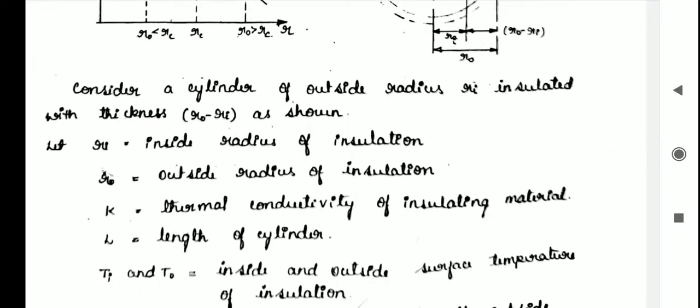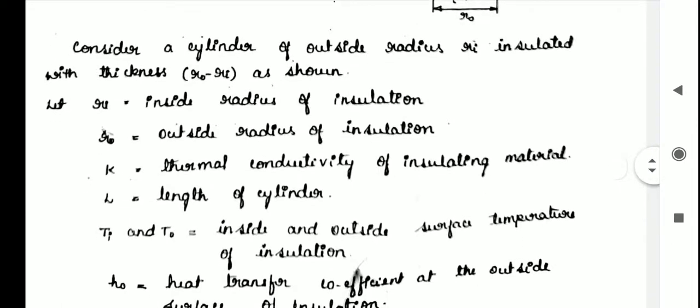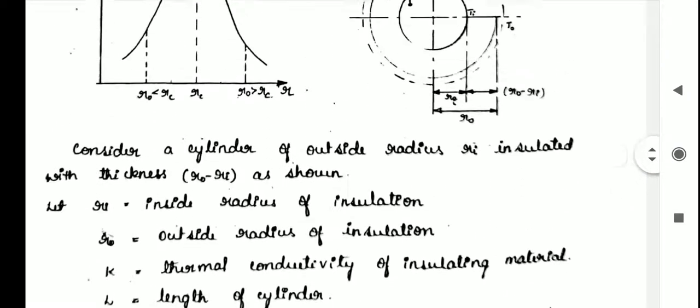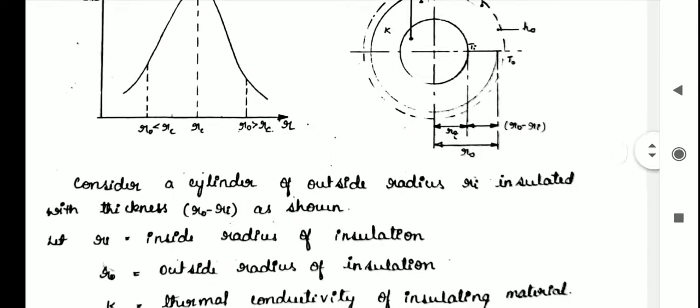K is the thermal conductivity of insulating material and L is the length of the cylinder and Ti and T0 are the inside and outside surface temperature of insulation. Hout is the heat transfer coefficient at outside surface. Here, convection is outside, so Hout not Hi.